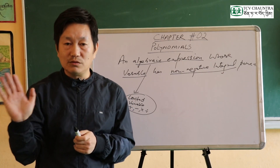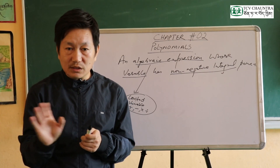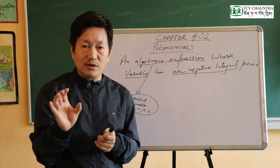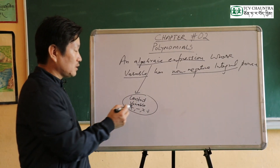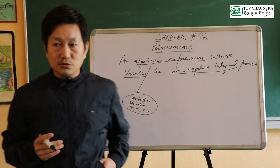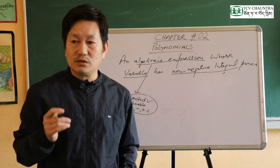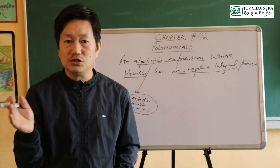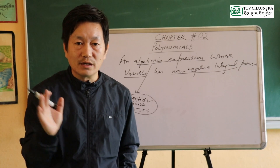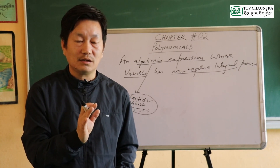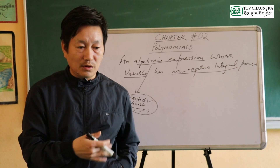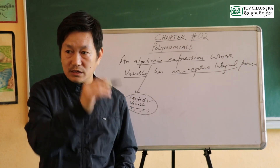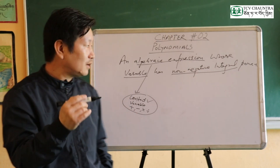A constant has a fixed value — it does not change. If a value is fixed, it is called a constant. A variable, on the other hand, does not have a fixed value; its value can vary.